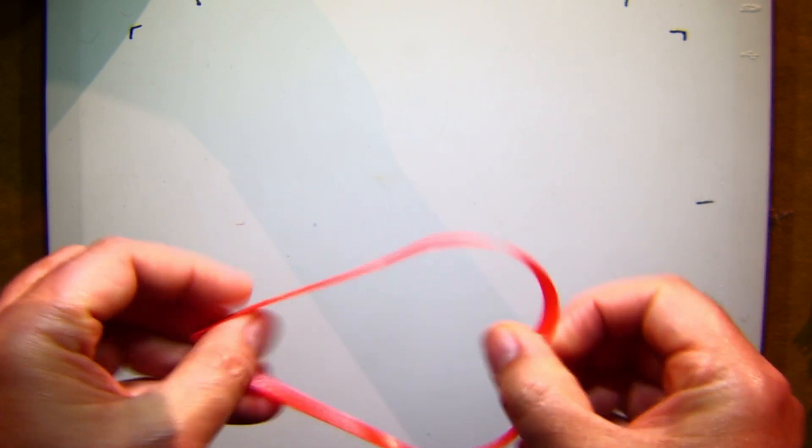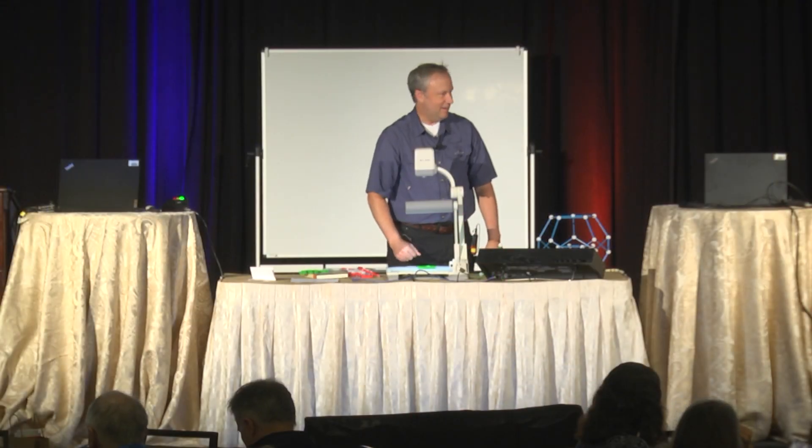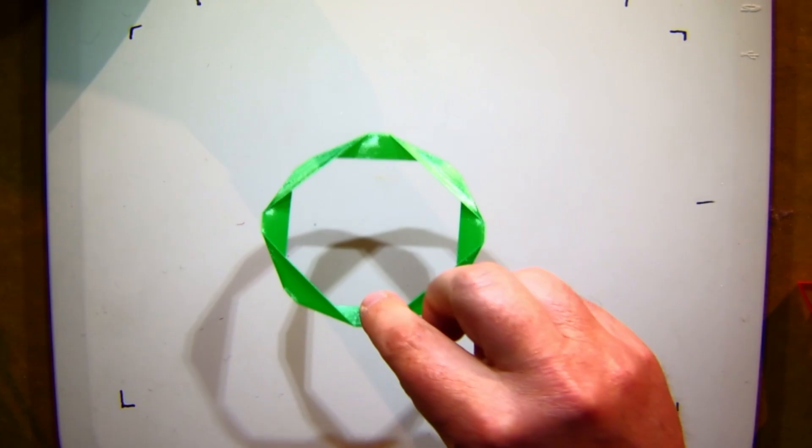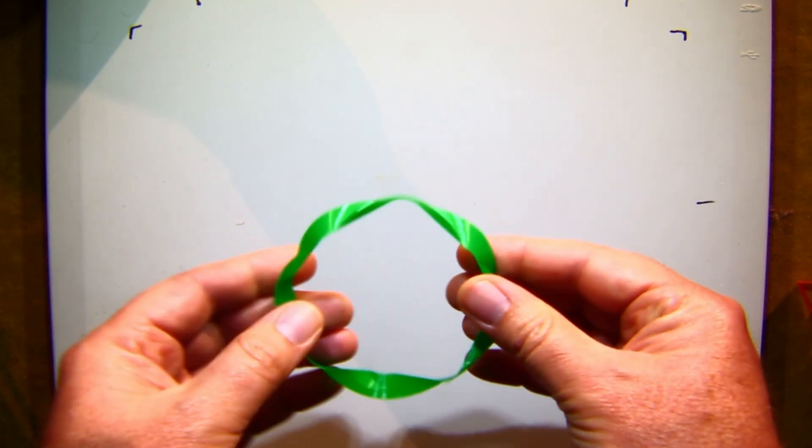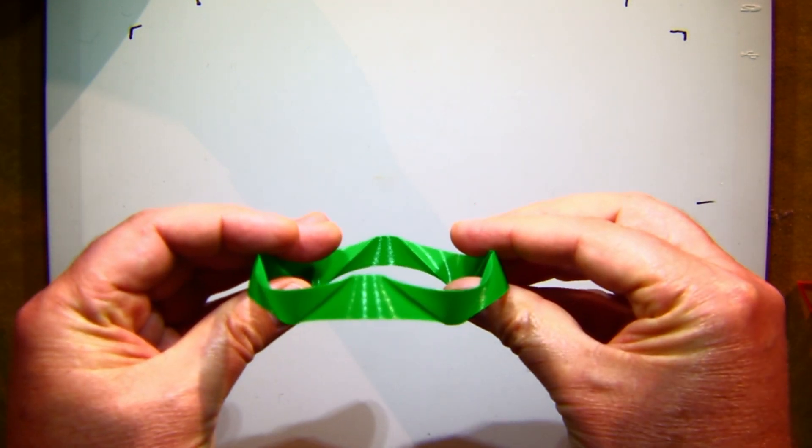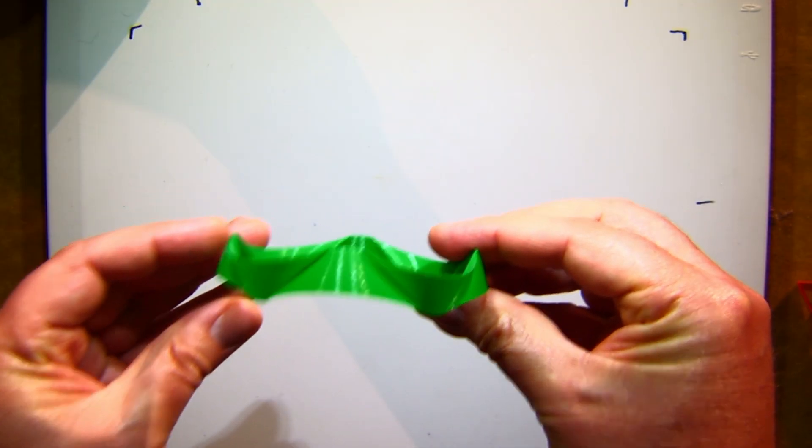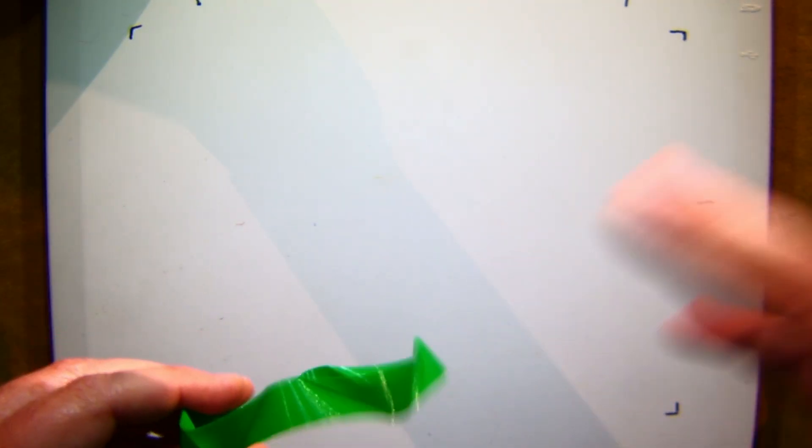And once it starts curving, you start asking more questions again of, let's make it more extreme. I'm going to go in and out and in and out and 3D print this. And then when I invert this, I get this wavy shape that is now oscillating more in the third dimension.